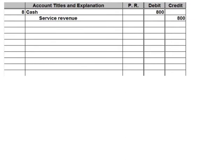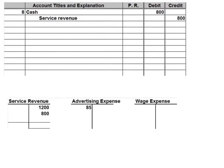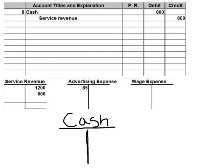Number nine states: paid wages to part-time assistant $350. We paid wages — that's a cash payment, so we're dealing with the cash account and the wage expense account. We're paying out cash for $350 toward our wage expense. Cash is an asset with a debit balance. Expenses are always debits — expense accounts have debit balances and increase on the debit side.